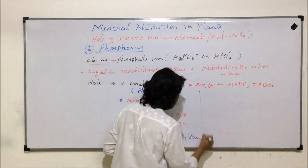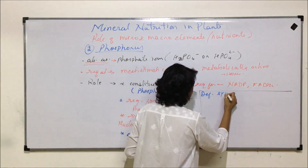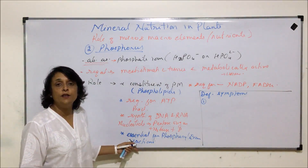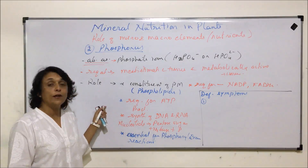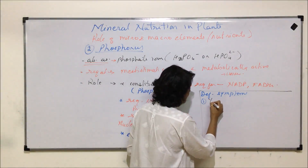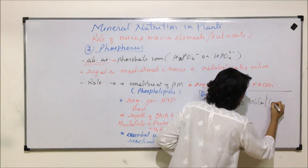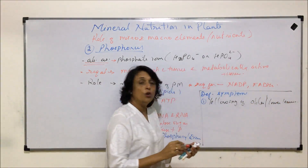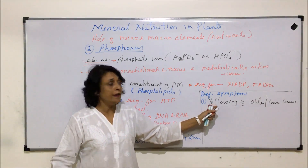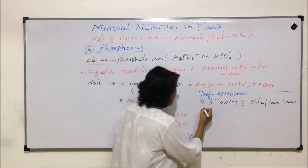Deficiency symptoms of phosphorus: first and most important, phosphorus is required for chlorophyll formation. If phosphorus is not available, the leaves turn yellow. The first deficiency symptom is yellowing of older or lower leaves. In acropetal arrangement, the older leaves are the lower leaves, so yellowing is seen in the older leaves.